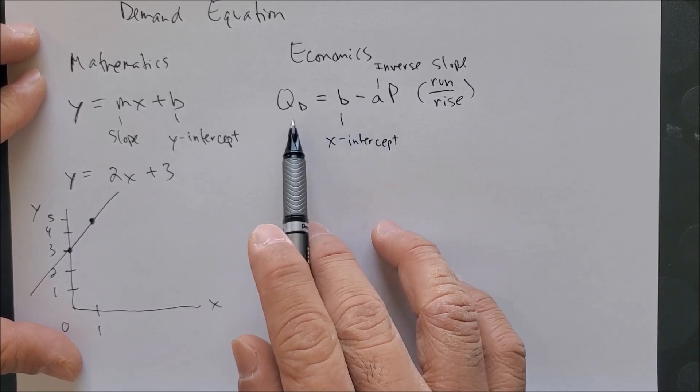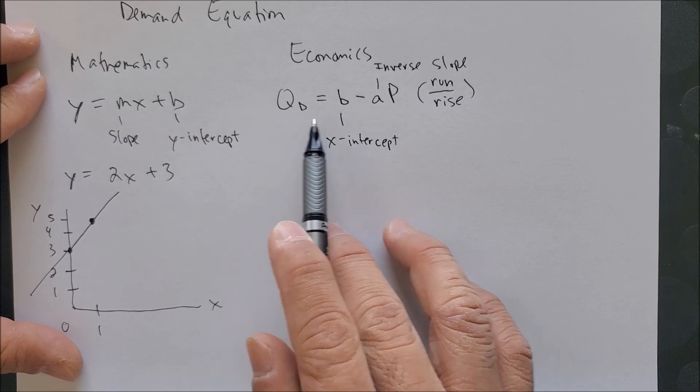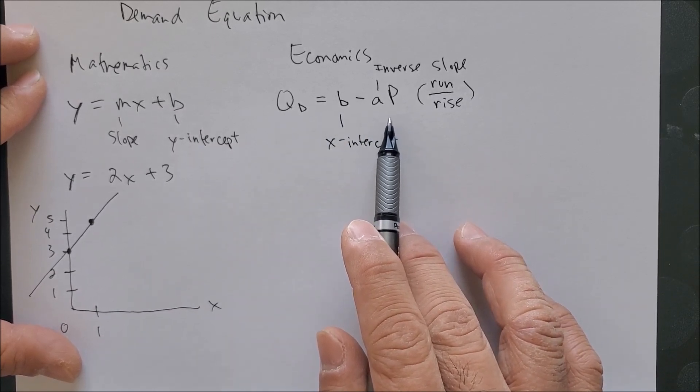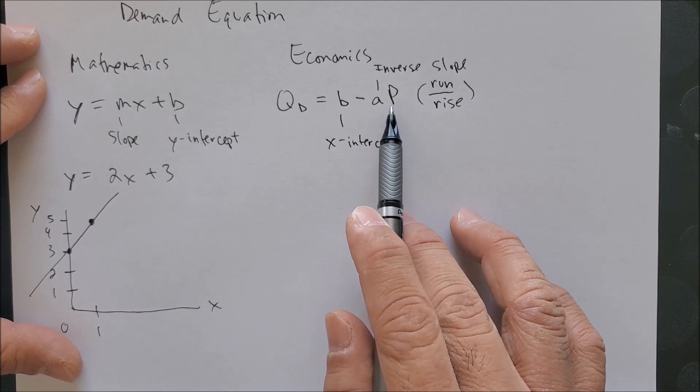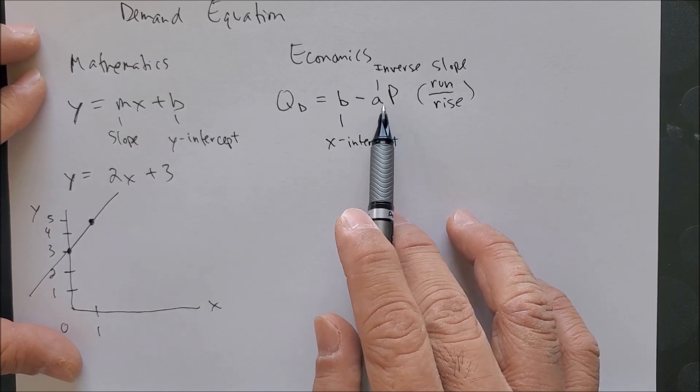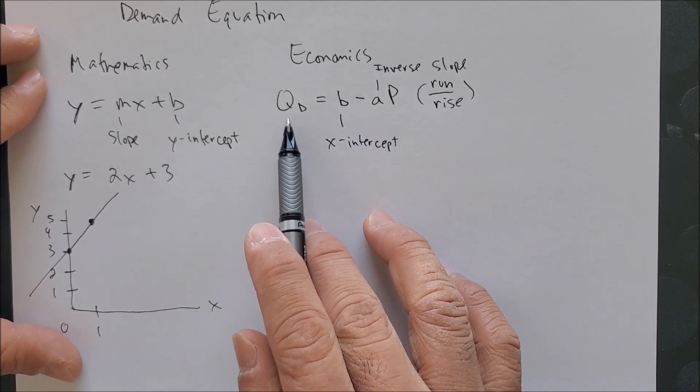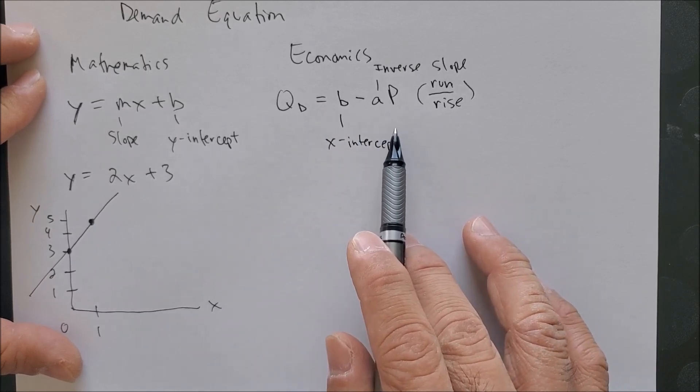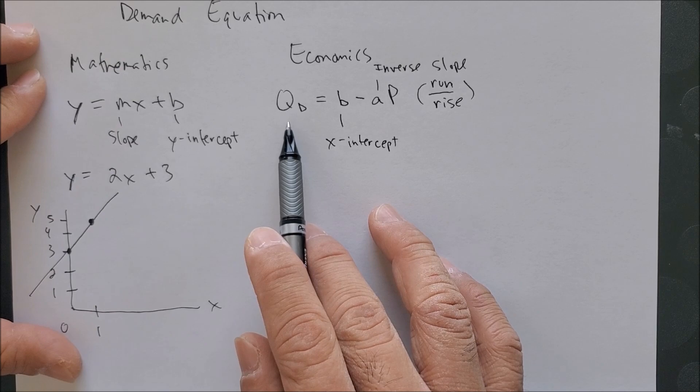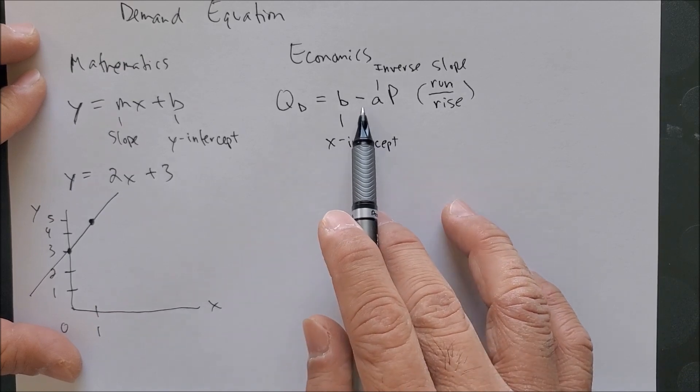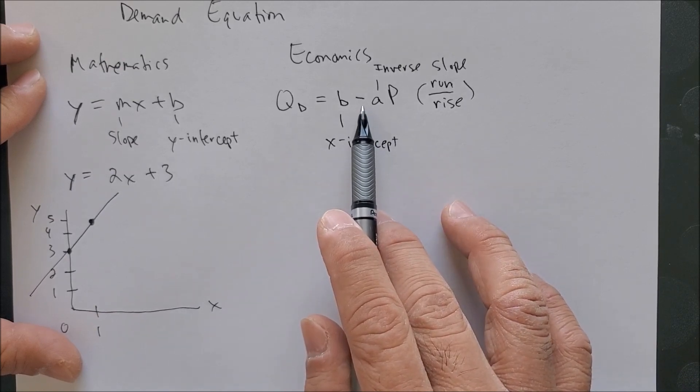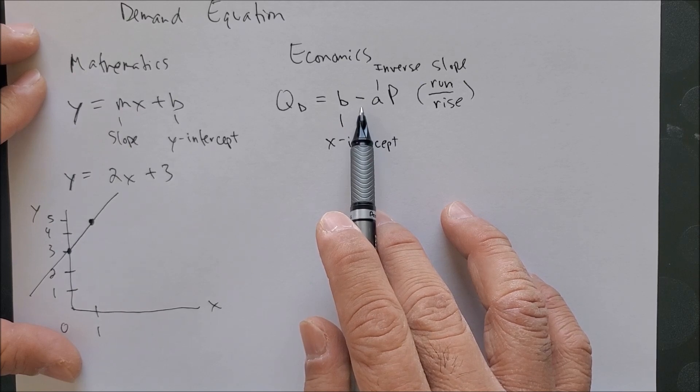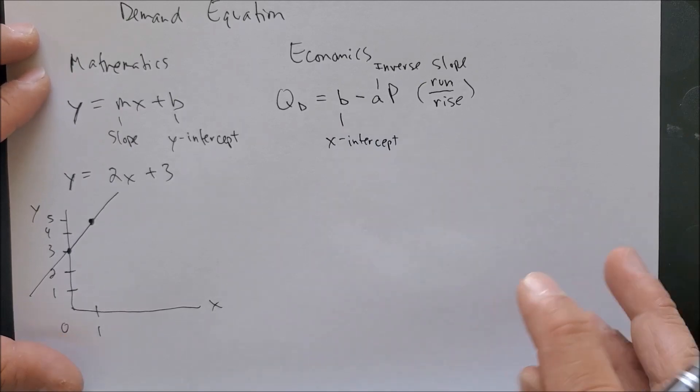So there is an inverse relationship between quantity and price. And that's why we have a downward sloping curve.